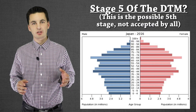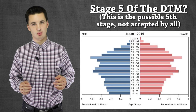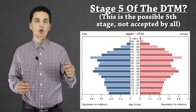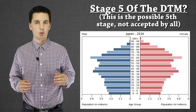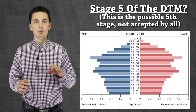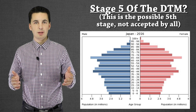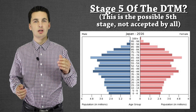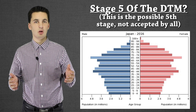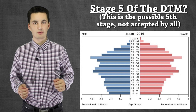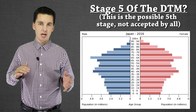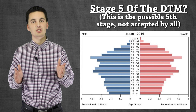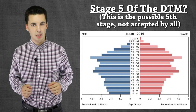In stage five, the top becomes the majority of the population and both the middle and the bottom have shrunk. We're no longer at the 2.1 replacement rate total fertility, so people aren't replacing themselves and we're seeing a decrease in population size and growth rate. This has happened to some countries already — Japan and Russia being two examples. Whether stage five is truly a distinct stage is still up for debate, but it represents a population in decline.